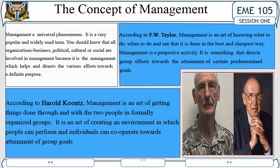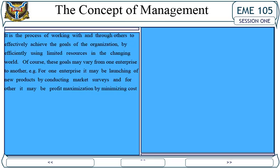According to F.W. Taylor, management is an art of knowing what to do, when to do, and seeing that it is done in the best and cheapest way. Management is a purposive activity — it directs group efforts towards the attainment of certain predetermined goals. It is the process of working with and through others to effectively achieve the goals of the organization by efficiently using limited resources in the changing world. These goals may vary — for one enterprise it may be launching new products, for another it may be profit maximization by minimizing costs.